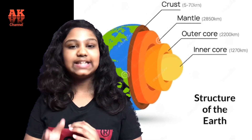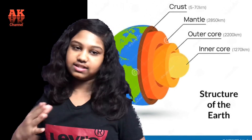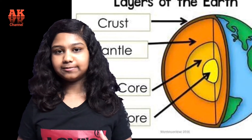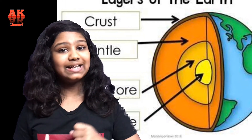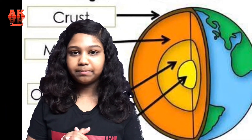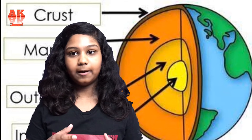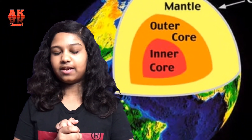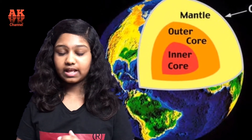Next comes the outer core. This outer core is the only layer made up of entirely liquid — entirely molten rock. The temperature of this hot layer is between 4,000 degrees Celsius and 5,500 degrees Celsius. The outer core is mainly made up of iron with a small amount of nickel.